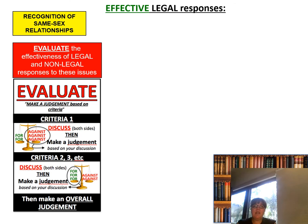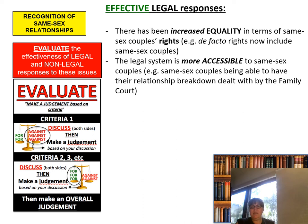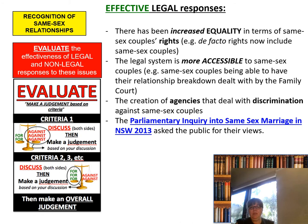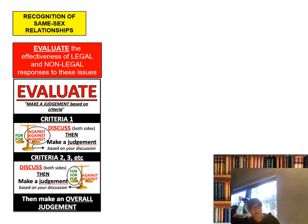Effective legal responses: there has been increased equality in terms of same-sex couple rights — for example, de facto rights now include same-sex couples. The legal system is more accessible to same-sex couples, meaning same-sex couples can have their relationship breakdown dealt with by the Family Court. The creation of agencies that deal with discrimination against same-sex couples. A parliamentary inquiry into same-sex marriage in NSW asked the public for their views. The voluntary postal plebiscite ended up with 61.6% of people voting yes. The Marriage Amendment Act of 2017 was passed.